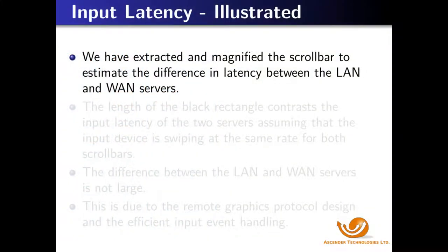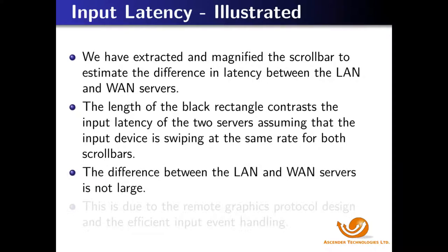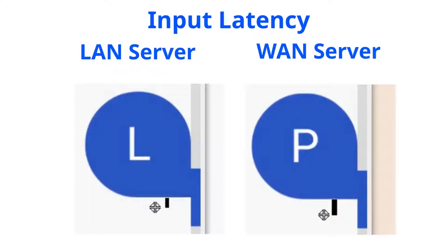We have extracted and magnified the scroll bar to estimate the difference in latency between the LAN and the WAN servers. The length of the black rectangle contrasts the input latency of the two servers. The difference between the LAN and the WAN servers is not large — this is due to the remote graphics protocol design and efficient input event handling. We now show the magnified scroll bars: the left uses a local server and the right is the remote server. The black rectangle measures the lag time between the cursor, controlled by the local client, and the graphical response of the server, which is the scroll bar bubble.